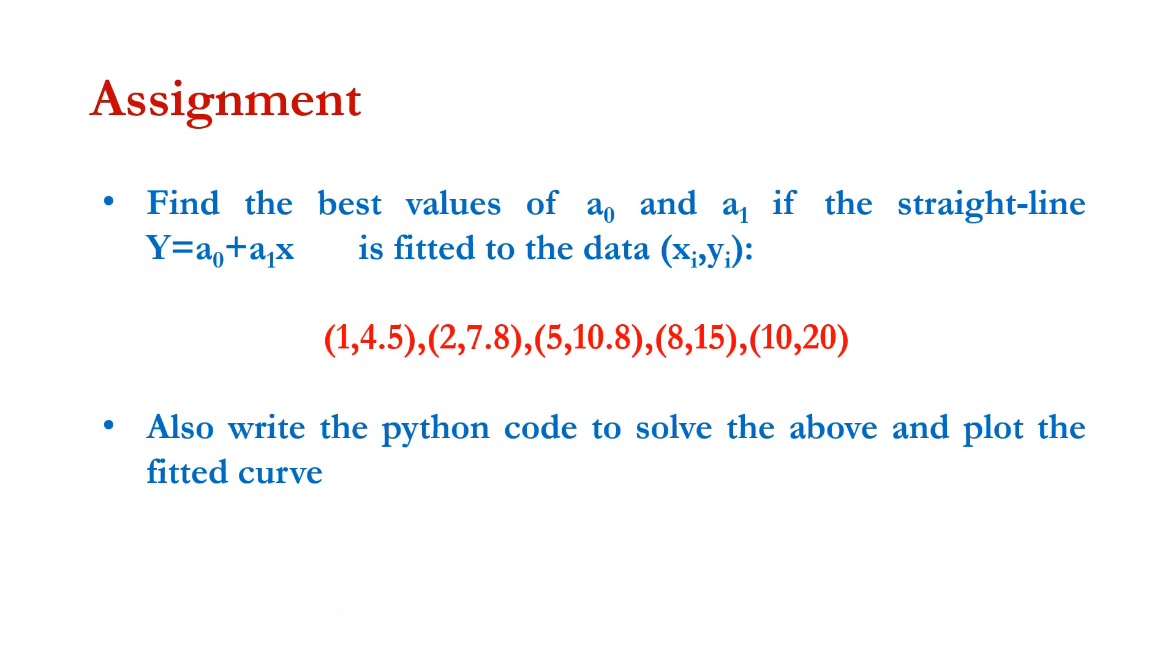Please note one assignment: find the best values of a₀ and a₁ if the straight line Y = a₀ + a₁x is fitted to the given data (1, 4.5), (2, 7.8), (5, 10.8), (8, 15), and (10, 20). Also write the Python code to solve the above problem and plot the fitted curve. Thank you for watching.